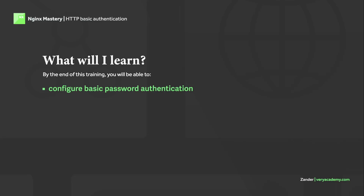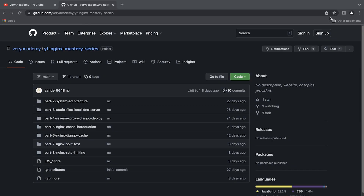Hello and welcome back, my name is Zander, welcome to the Nginx Mastery Series. This tutorial is very simple — we're going to configure basic password authentication. The scenario is that we have an endpoint of some sort, maybe a location that we want to secure via password. We're going to create a password file, set a username and password, and then apply that to a location block.